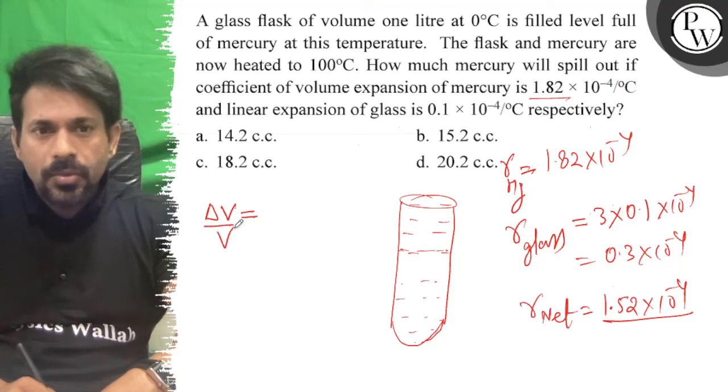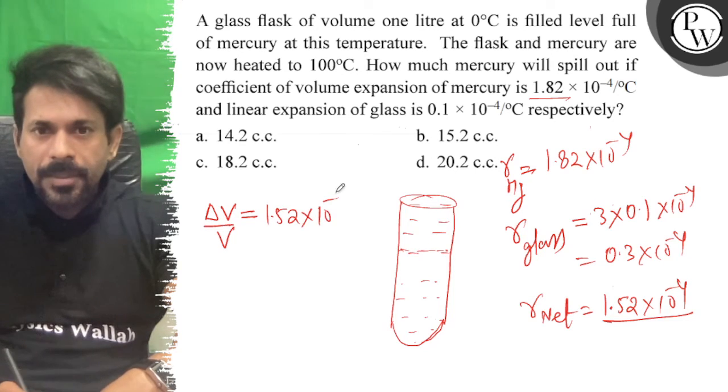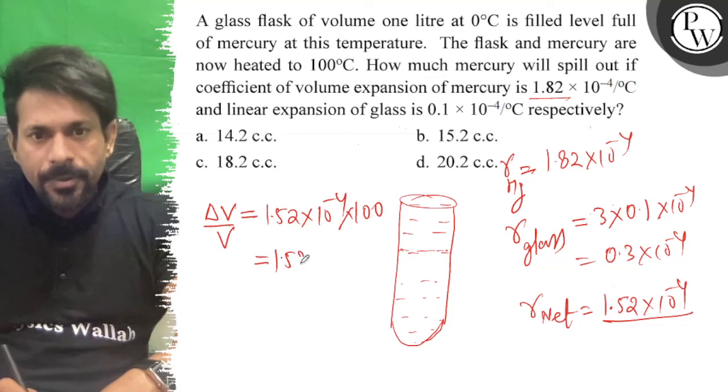Delta V over V equals delta gamma, which is 1.52 × 10^-4 times delta T, which is 100. So this is 1.52 × 10^-2.